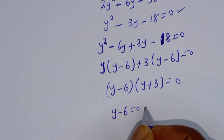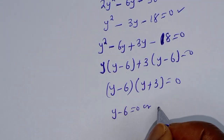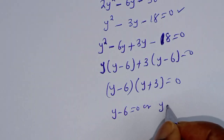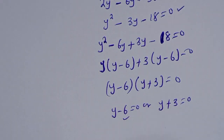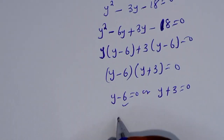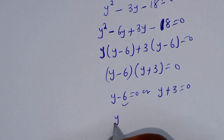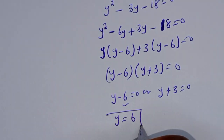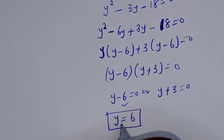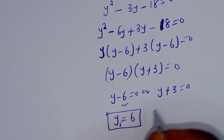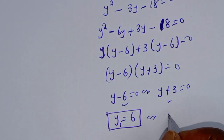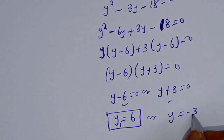There are two cases: y - 6 = 0 or y + 3 = 0. From the first case, y₁ = 6. From the second case, y₂ = -3.